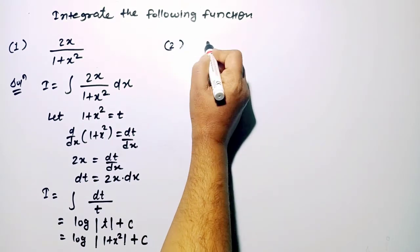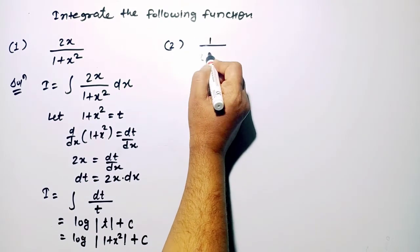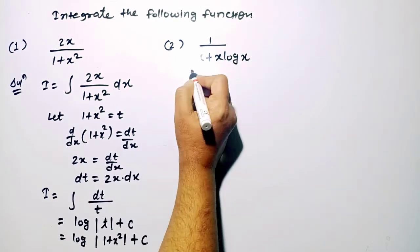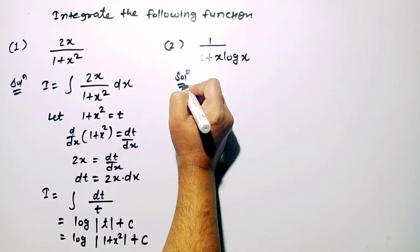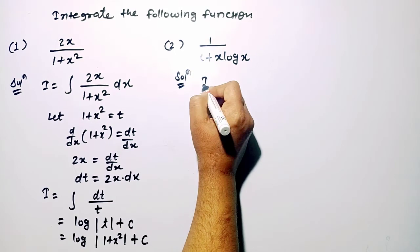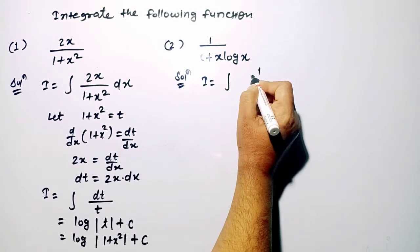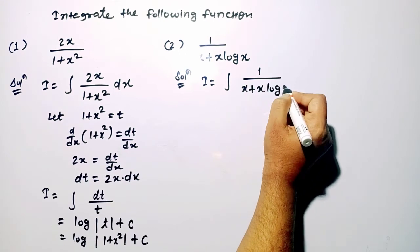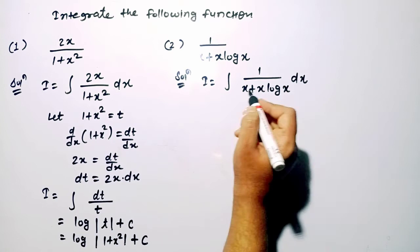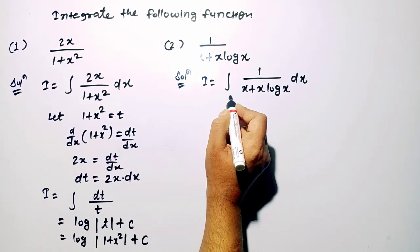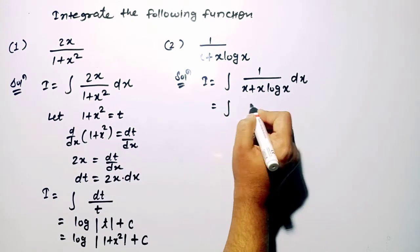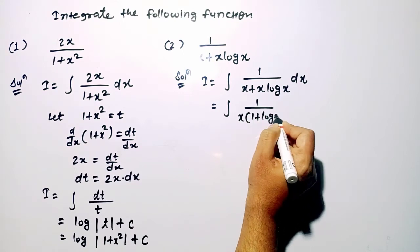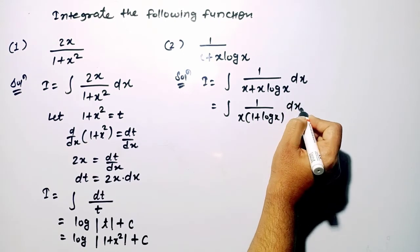Moving to question number 2: 1 upon x plus x log x. I is equal to the integration of 1 upon x plus x log x dx. In the denominator, x is a common term, so we factor out 1 upon x, giving 1 plus log x in the remaining factor.